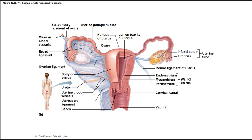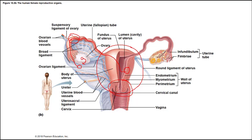Another view shows the ovary producing an egg that ruptures out and is swept into the fallopian tube by finger-like projections. Fertilization usually occurs in the fallopian tube region, not the uterus. If fertilized, the egg continues to the uterus and implants in the uterine wall, where the baby grows and the structure enlarges greatly through pregnancy. The cervix is the passageway between the uterus and the vagina, widening during childbirth.